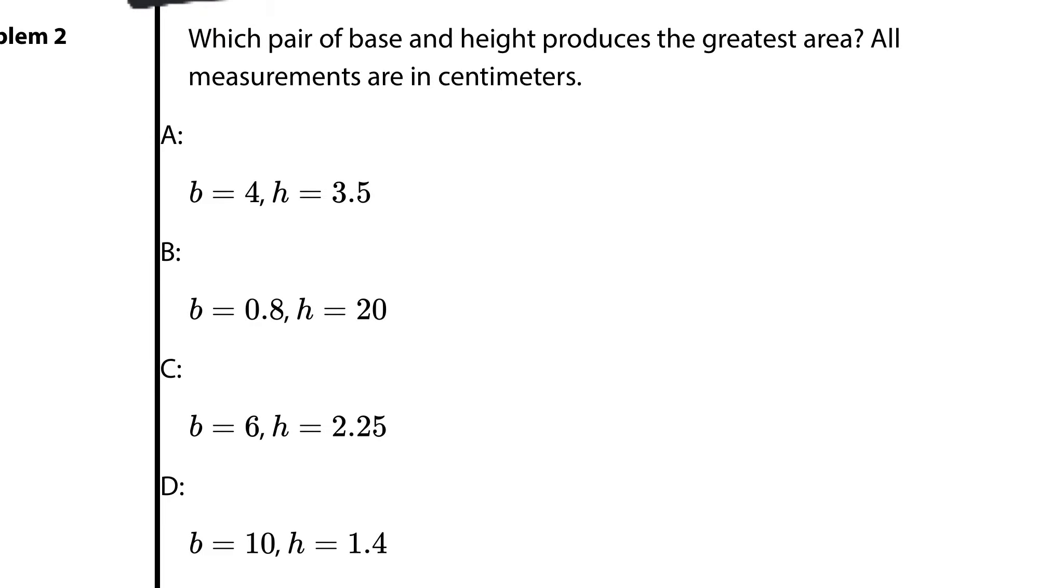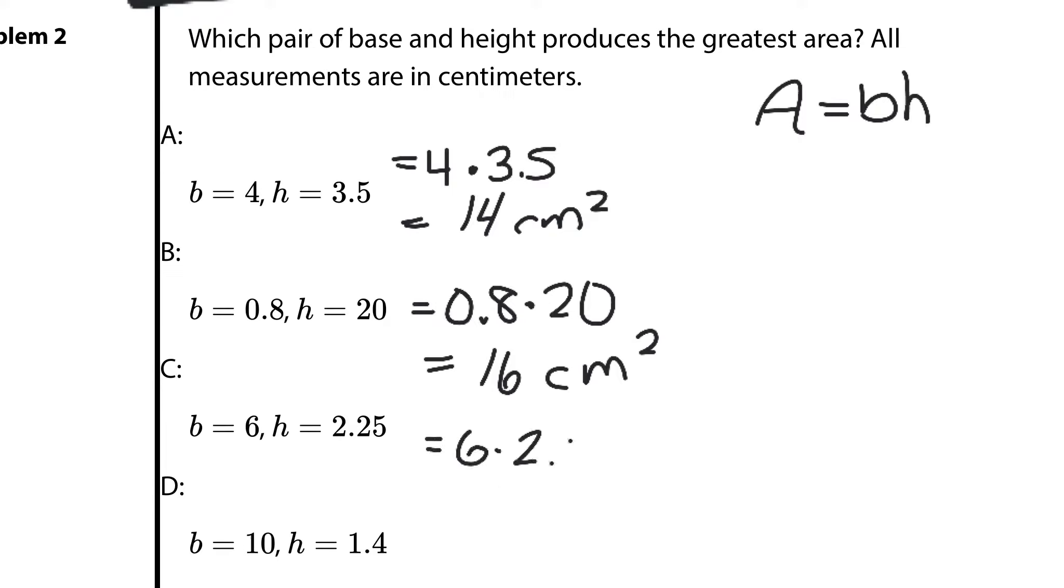In Problem 2, which pair of base and height produces the greatest area? All measurements are in centimeters. Well remember, area for parallelograms is base times height. When we multiply 4 times 3.5 together, we end up with 14 square centimeters. When we multiply 0.8 times 20 together, we end up with 16 square centimeters. When we multiply 6 by 2.25 together, we get 13.5 square centimeters. And when we take 10 times 1.4, we get 14 square centimeters. So which of these solutions has the greatest area? B.